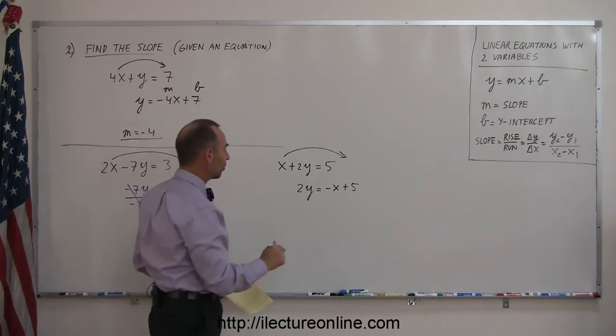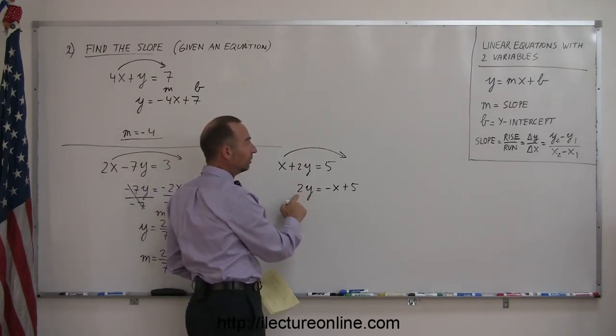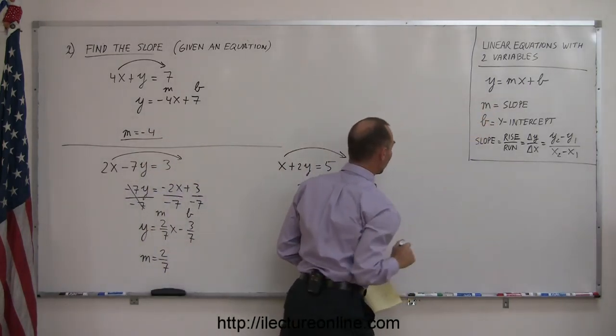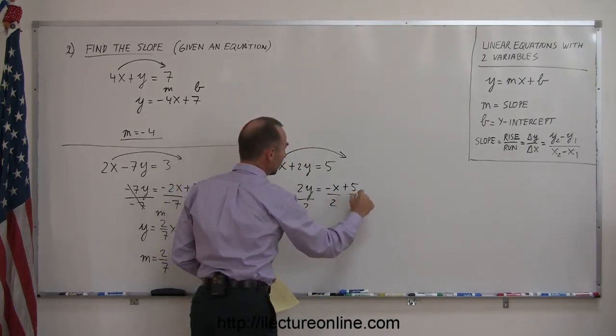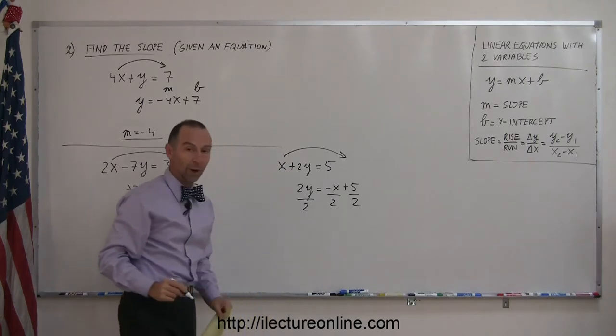Okay, you're not ready yet, because the number in front of the y is not a 1, like y equals mx plus b. That means you want to divide both sides of the equation by the numerical coefficient in front of the y.